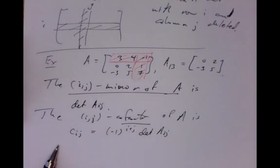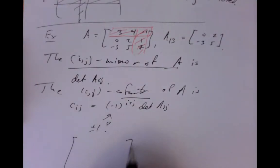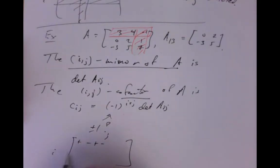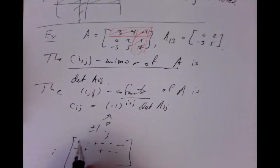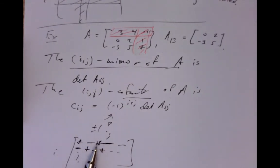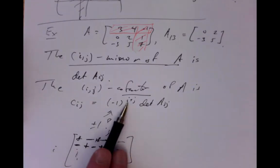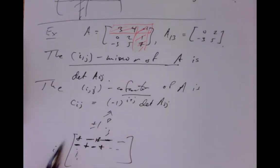What does (-1)^(I+J) actually look like? It's either plus 1 or minus 1. The pattern across rows and columns is a checkerboard: plus, minus, plus, minus... then minus, plus, minus, plus... and so on. So you get this checkerboard pattern of pluses and minuses in the various rows and columns, which tells you what sign to put in front to make the cofactor out of the minor.